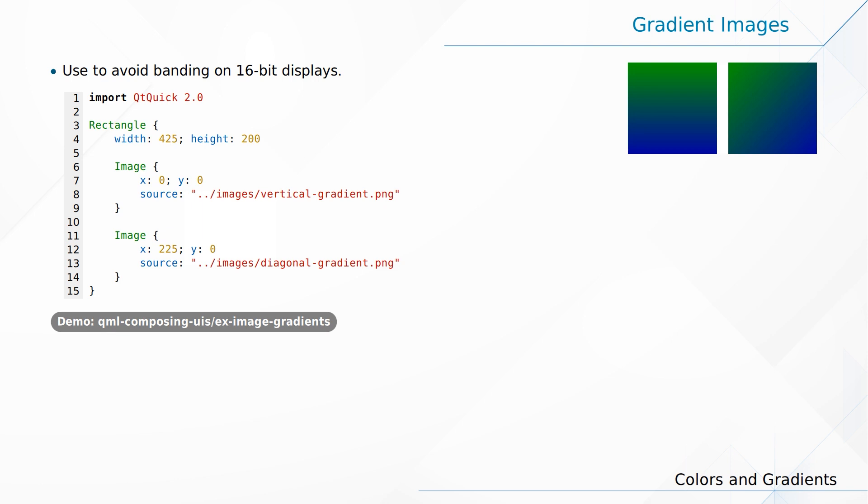So the old advice — Qt Quick 1, gradient elements are slow — no longer applies. But if you have an 8 or 16-bit display, you still have the banding problem, and that can be solved with images.